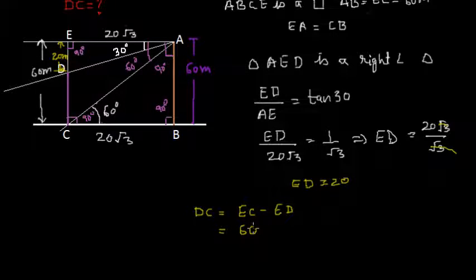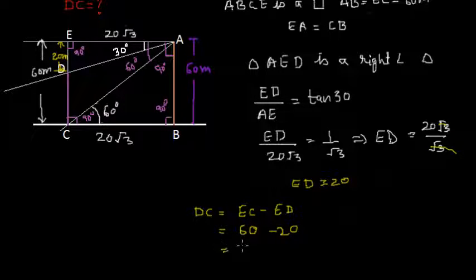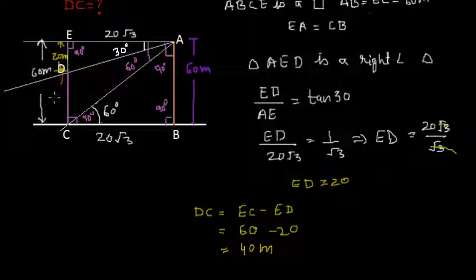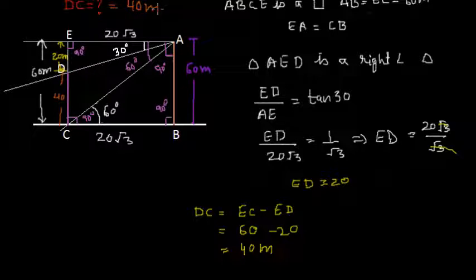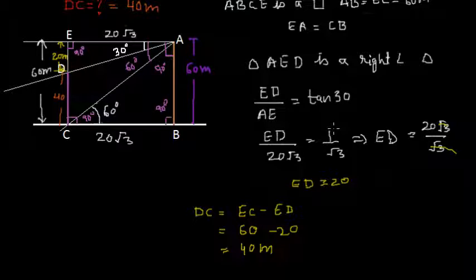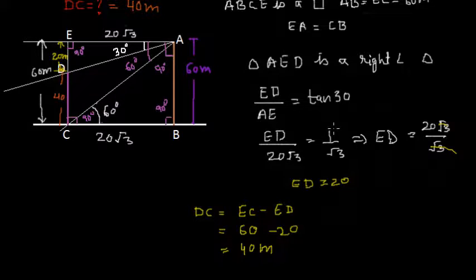From here we can find the height of the tower, which is DC. DC equals EC minus ED. EC equals AB which is 60 meters, so DC equals 60 minus 20, that is 40 meters. The height of the tower is 40 meters — and this is what we were supposed to find. After this we are going to solve a few more problems based on trigonometry, so keep watching MathSmart.